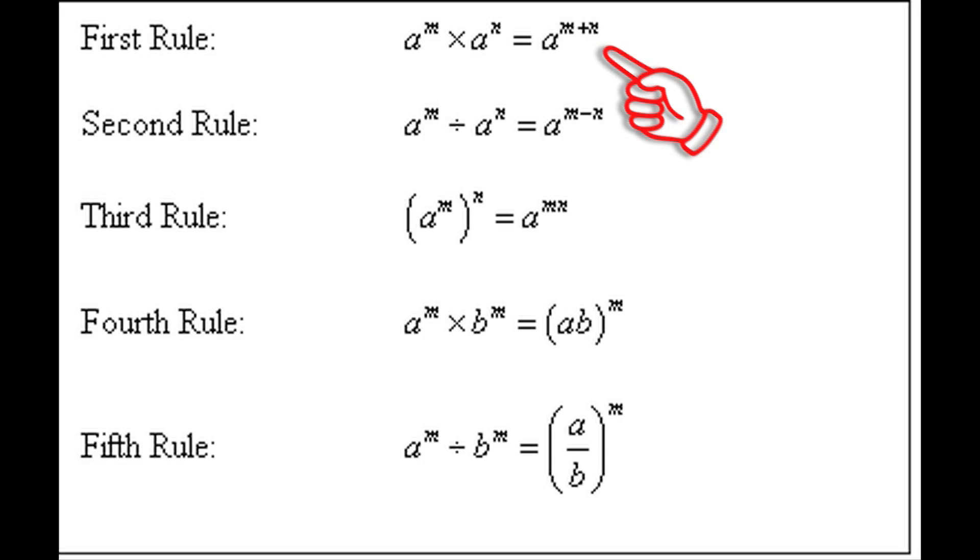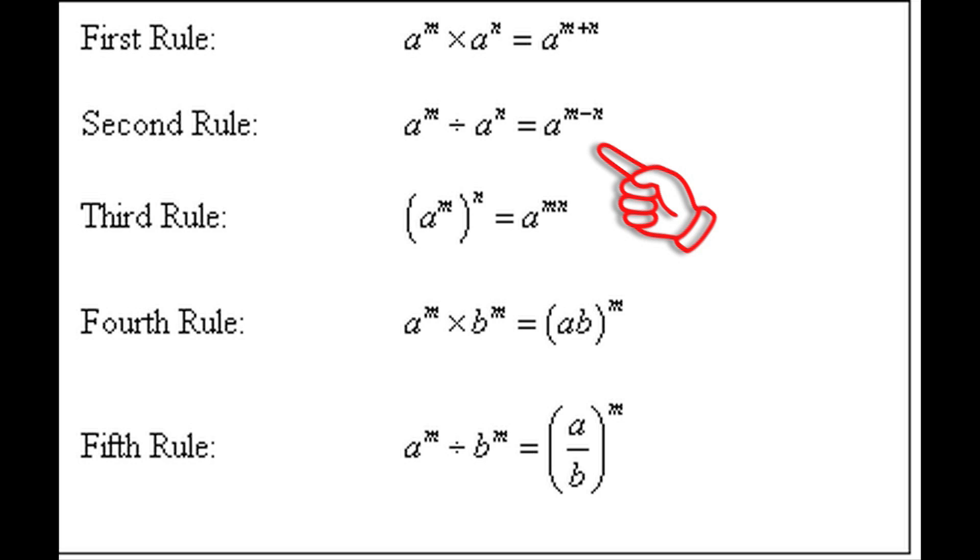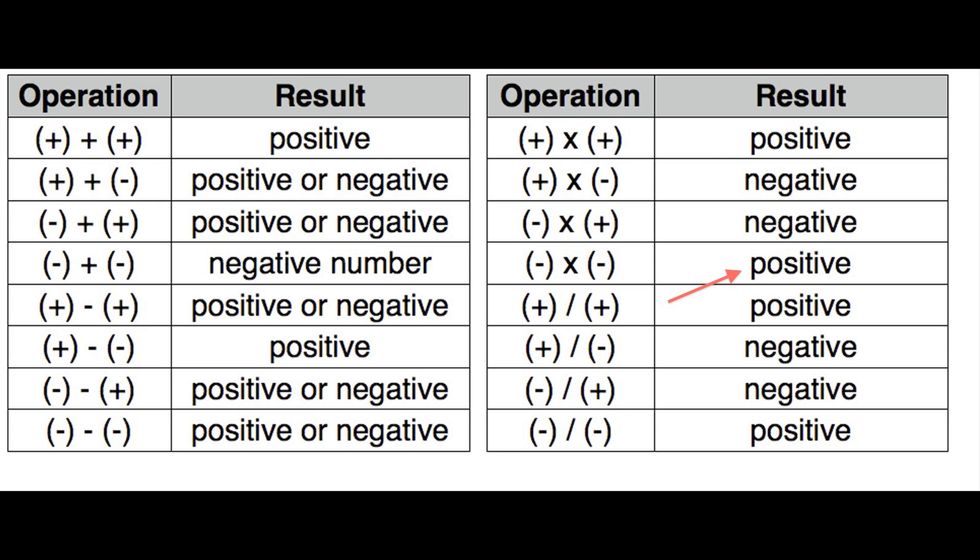Basically, if you've got two numbers with an exponent and they're multiplied, you just add the two exponents. If you've got two numbers with an exponent and they're dividing, you just subtract one from the other. A negative times a negative is a positive. A positive times a negative is a negative. A positive times a positive... I don't remember.